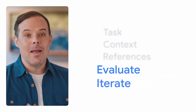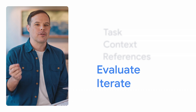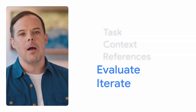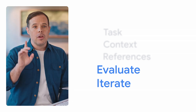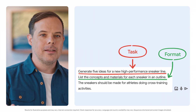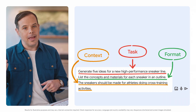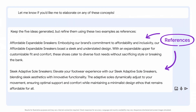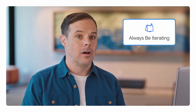Evaluating the output and iterating might be the last parts of our prompting framework, but they're also where we get to experiment and get creative. Each new output is an opportunity to further refine your prompt until you get the response you want. In fact, we've been evaluating and iterating this whole time. We evaluated the sneaker ideas from our first prompt and iterated by adding context. We evaluated the output again and iterated by adding references. Remember, we can always add details or tweak phrasing to change our outputs. We like to say ABI — always be iterating.